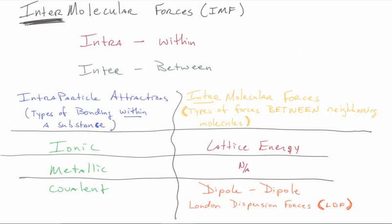We're gonna talk today about intermolecular forces. I need to make sure you understand that inter means between molecules, and intra is within. So if we take a look here, intra-particle attractions are the types of bonding within a substance — that's your ionic bonds, your metallic bonds, your covalent bonds. What we're going to focus on today is these inter-molecular forces, or IMFs — the types of forces that exist between neighboring molecules.